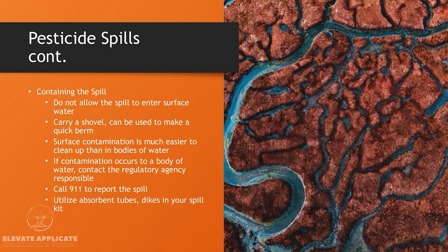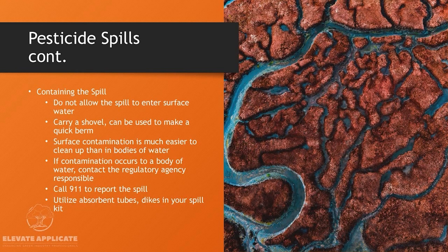To contain the spill, do not allow it to enter surface water. Carry a shovel to quickly make a berm and prevent runoff into water. Surface contamination is much easier and less expensive to clean up than contamination of a body of water — you can often just dig down a couple inches and replace the soil. If contamination does reach a body of water, contact the responsible regulatory agency. Call 911 to report the spill, and utilize absorbent tubes, dikes, and your spill kit.